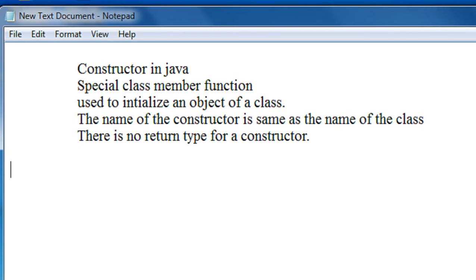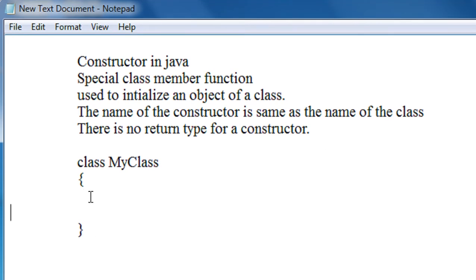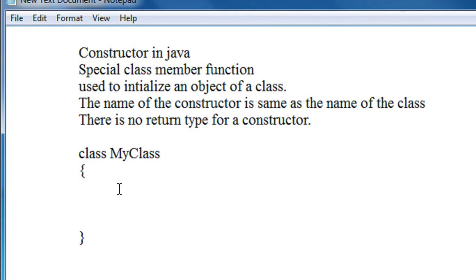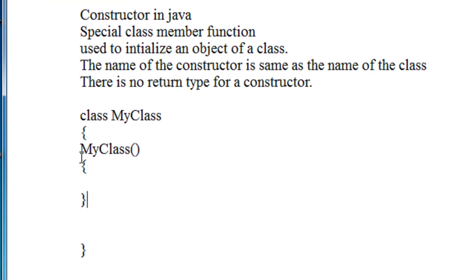Suppose we have a class called MyClass. Here the name of the class is MyClass. If I want to create a constructor for this class, then the format of creating the constructor is MyClass. This is the syntax for creating a constructor — the name of the class and the name of the constructor must be exactly the same.